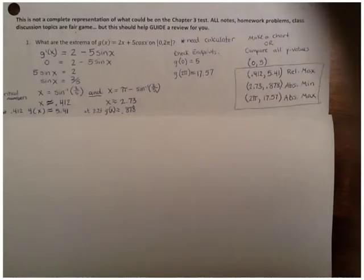With the first question on that practice test, with those Chapter 3 review problems, we had to find the extrema of g(x) equals 2x plus 5 cosine x over the interval from 0 to 2 pi. And in order to find the extrema, we take the derivative, set it equal to 0, and also check where the derivative does not exist, but in this case that's not applicable. When we take the derivative and we set it equal to 0, we get that x is arc sine of 2/5 and pi minus arc sine of 2/5.